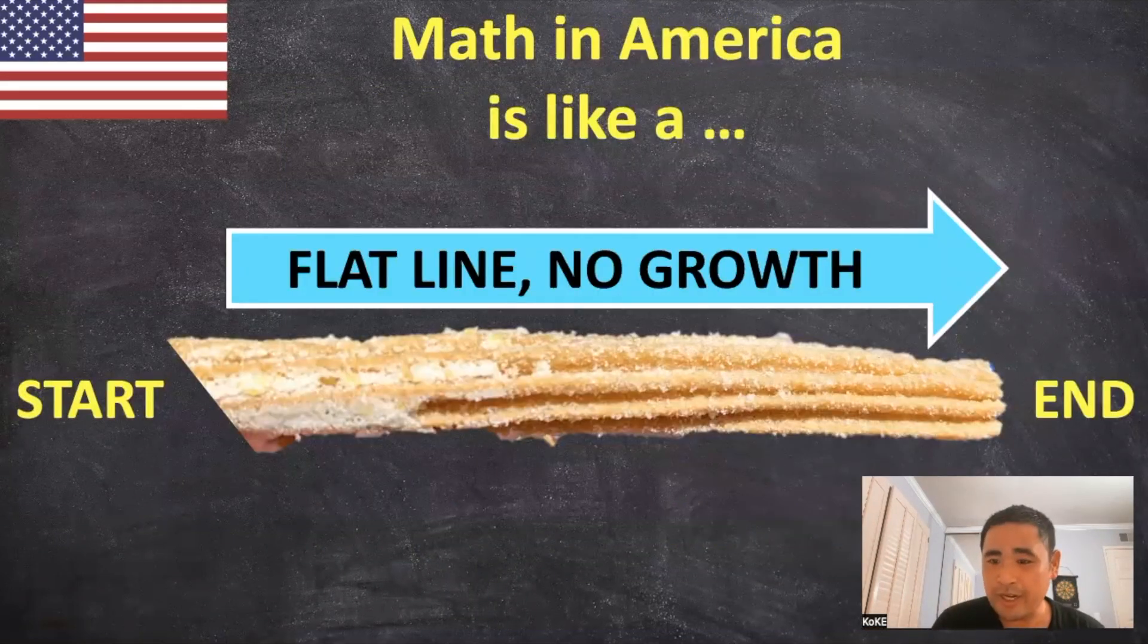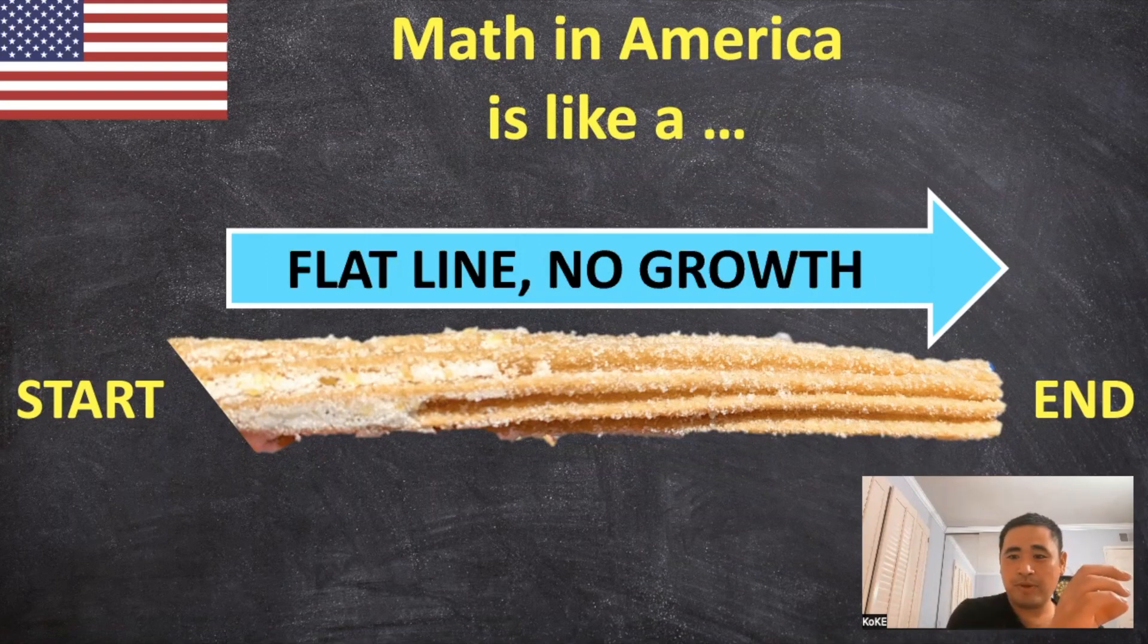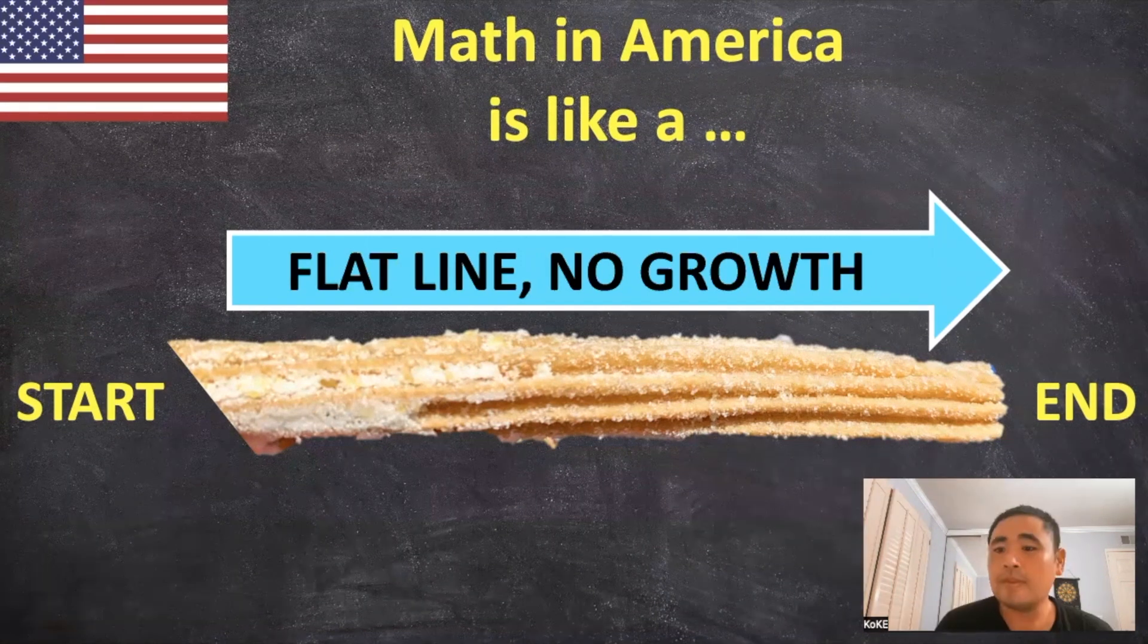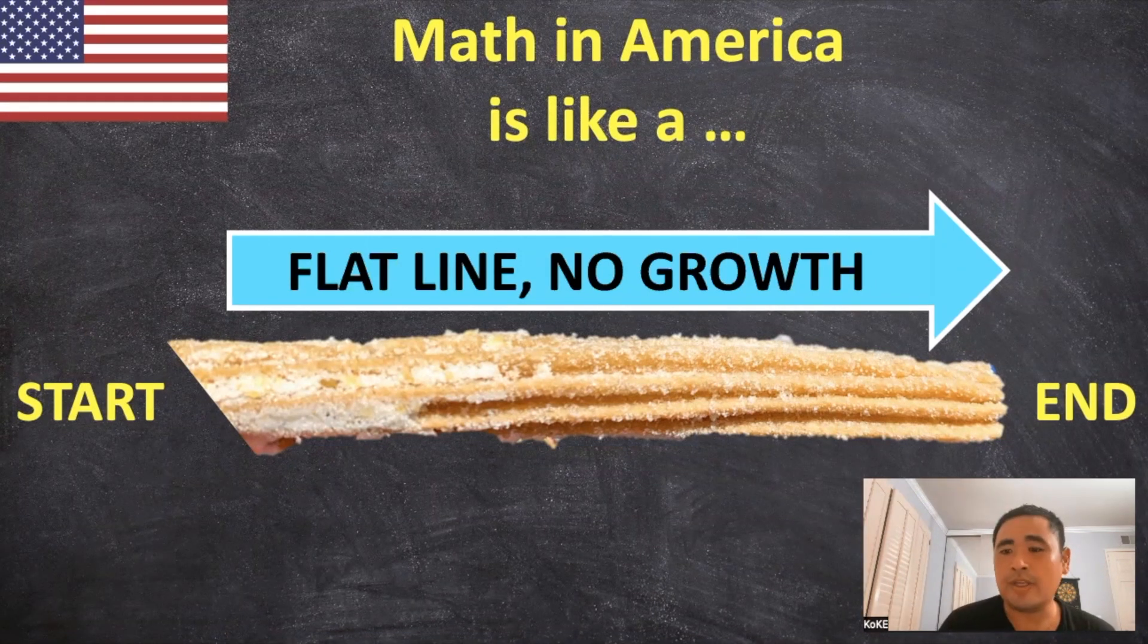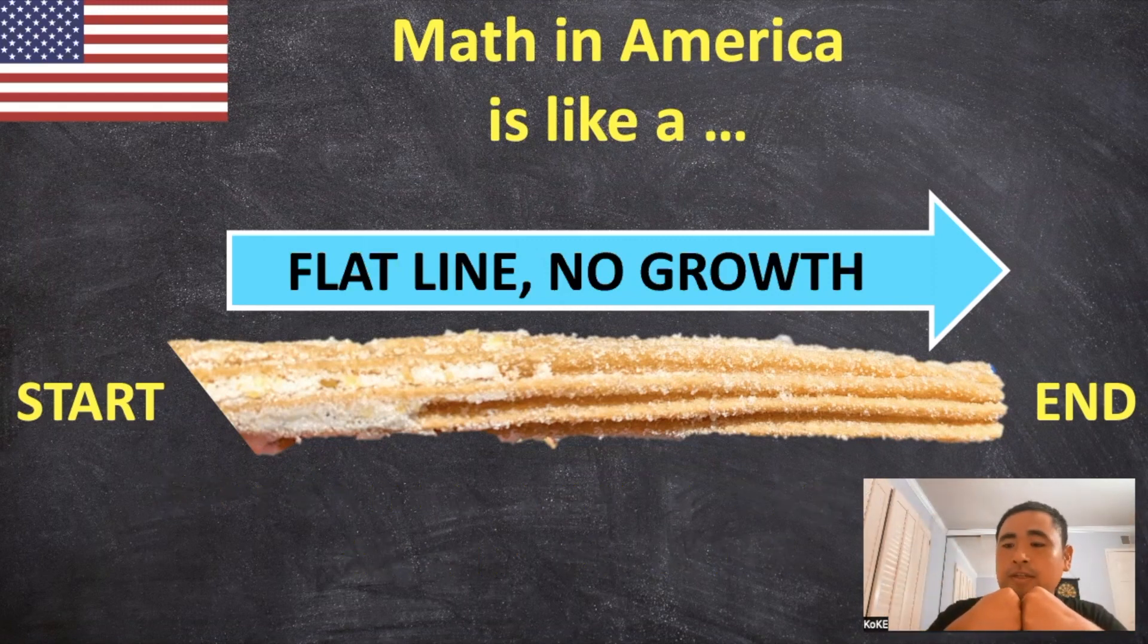So why did I refer to American math being like a churro? Well, it starts from one point and you're doing problems all the way until the end of the churro, but it's just a flat line and there's no real growth to it. The problem here is that students aren't allowed or given the opportunity to really expand their minds and link mathematical concepts together.